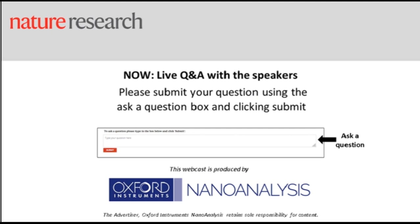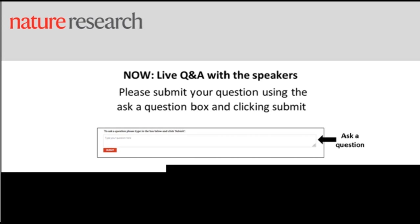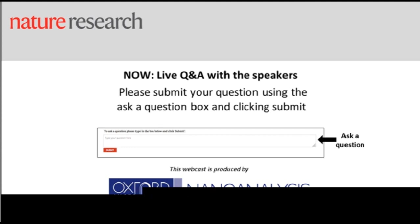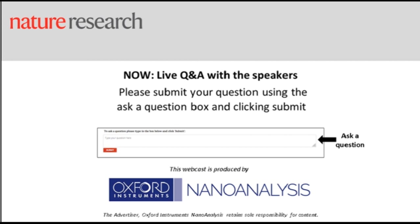Thank you for your presentations Alexandra and Pat. It is now time for the Q&A. Our first question asks: what beam current do you need to use on geological samples and how fast can you analyze them using EBSD? Typically, although there is no hard rule, we would use somewhere between 10 and 13 nanoamps depending a little bit on the sample. The speed at which we can analyze using EBSD is very dependent on the complexity of the sample, but typically we'd be around 500 patterns per second including the indexing process.